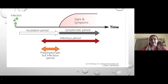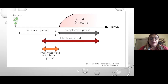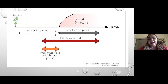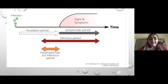The median incubation period is five days, with a range of two to fourteen days. The epidemiology differs from flu — you shed virus about three to four days before onset of symptoms in the pre-symptomatic phase, and may continue shedding for up to ten days. Beyond eight days viable virus was not found. There is also a large cohort of asymptomatic patients who never develop symptoms.